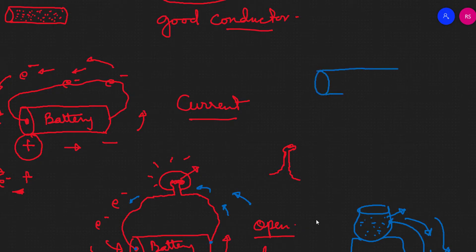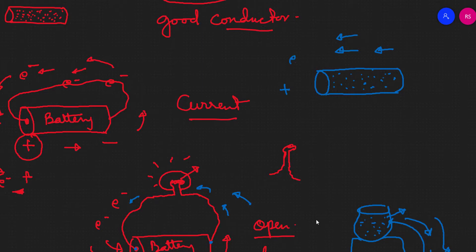If we use the copper wire, the potential difference is applied as electric pressure, and the electric pressure drives the electrons. This is the direction of the positive charge and the direction of the negative charge. The electric pressure gives the direction of current flow.